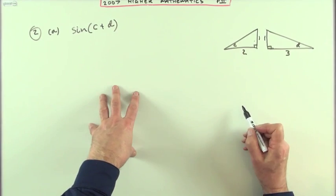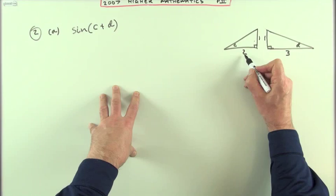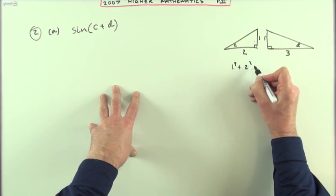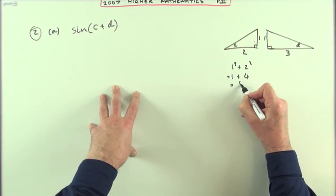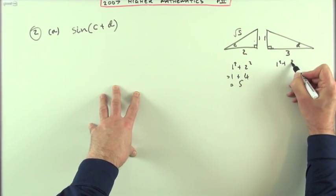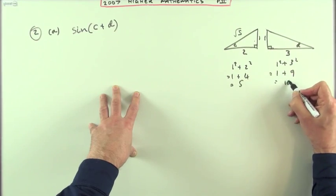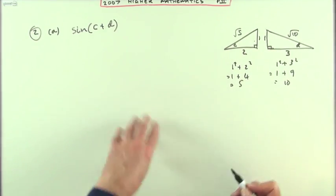Let's finish off the triangles then. Right angle triangles, you can use Pythagoras to complete the sides. 1 squared and 2 squared, I'll put the working down, 1 squared and 2 squared is 1 plus 4 which is 5, so that must be root 5. 1 squared and 3 squared is 1 plus 9 which is 10, so that's root 10.